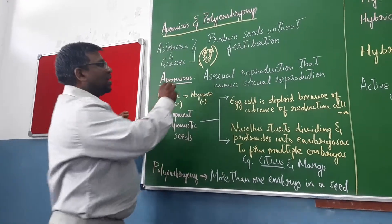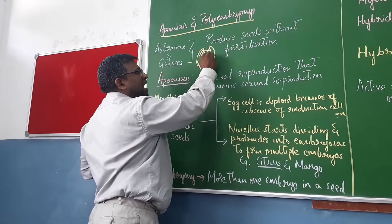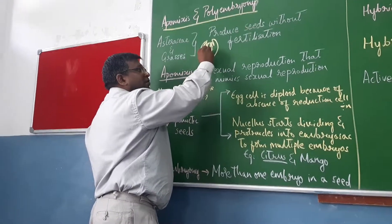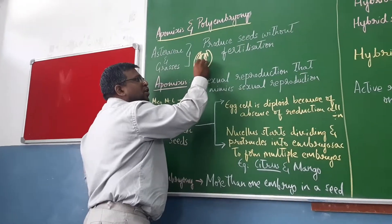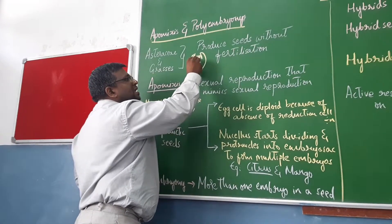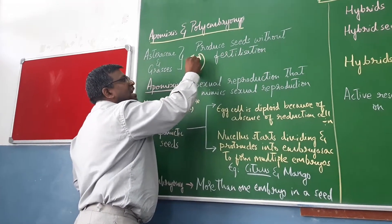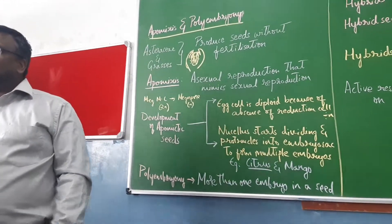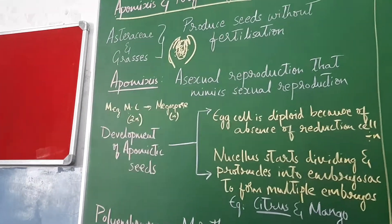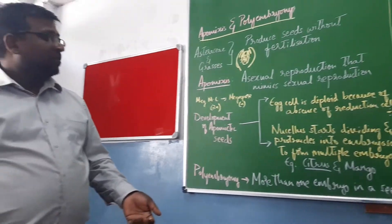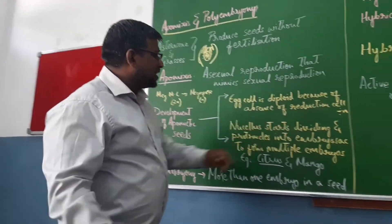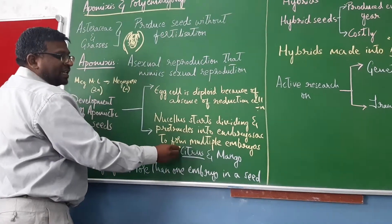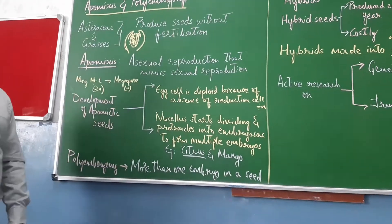What happens here is that while one cell has formed the embryo sac, some of the nucellar cells protrude into the embryo sac and start functioning as embryos — without fertilization. These nucellar cells start dividing, protrude into the embryo sac, and go on to form multiple embryos.